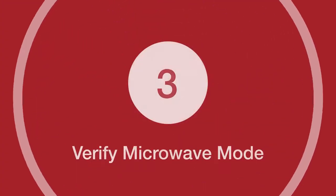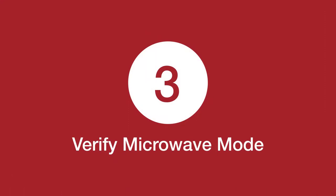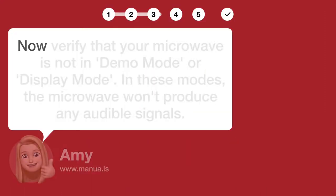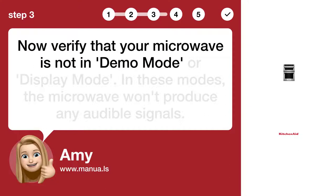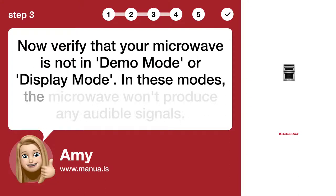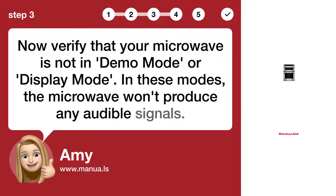Step 3: Verify microwave mode. Now verify that your microwave is not in demo mode or display mode. In these modes, the microwave won't produce any audible signals.